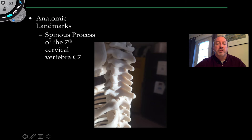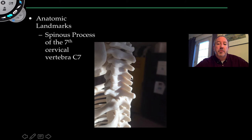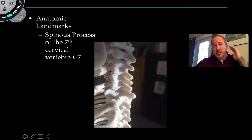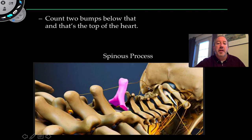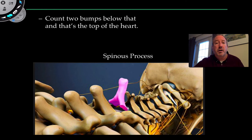Toward the back, or posterior side, is the vertebral column. These are the cervical bones of the back of your neck, and the protruding structures are spinous processes. Counting down from cervical one through seven, the seventh cervical vertebra, C7, has a really long spinous process that you can easily feel on a patient. If you count just two bumps below that, that's also the top of the heart — useful if you want to listen with a stethoscope.